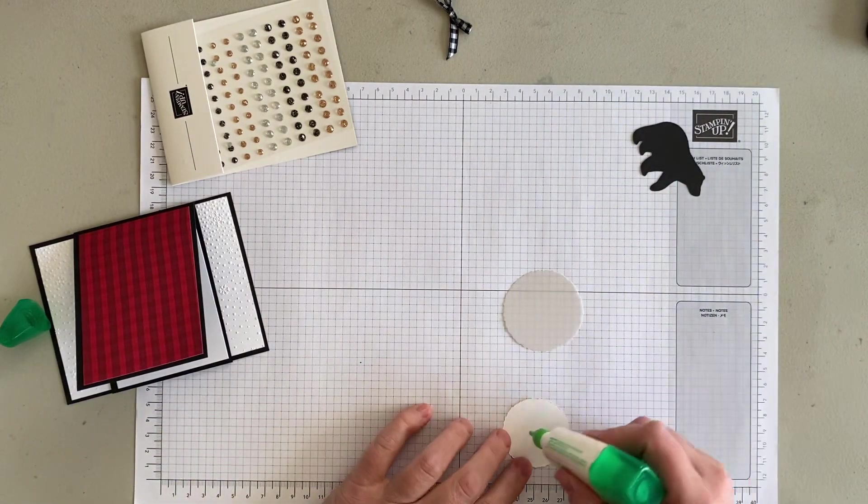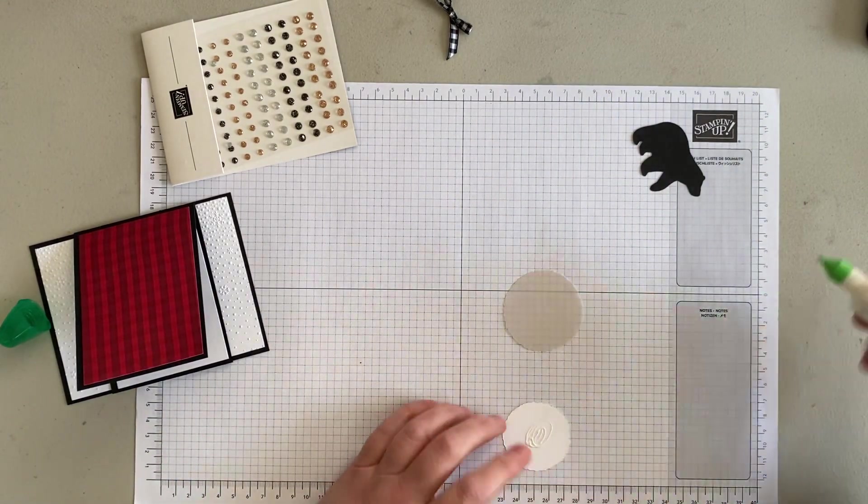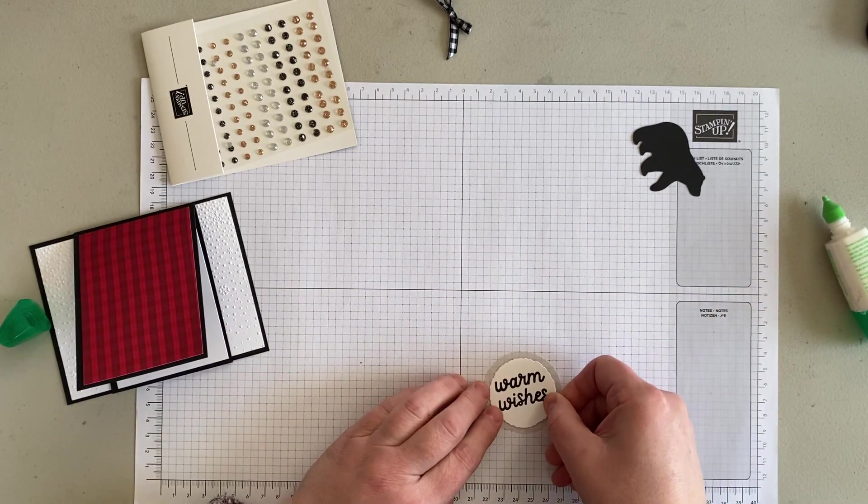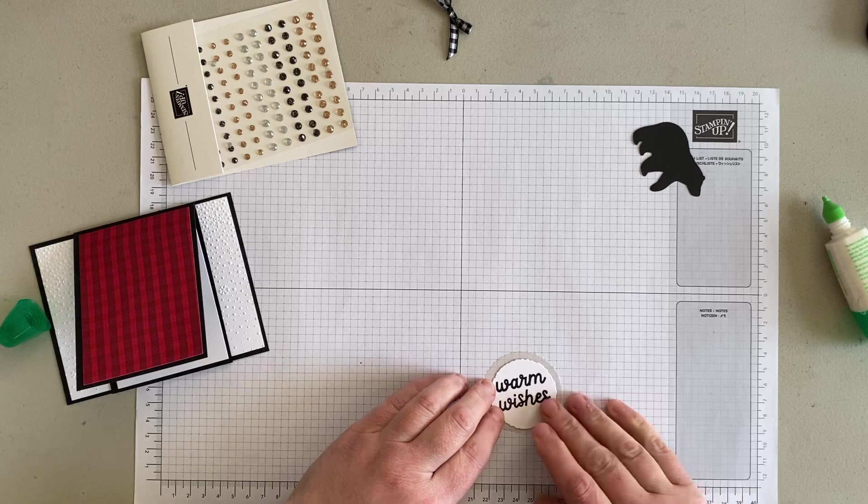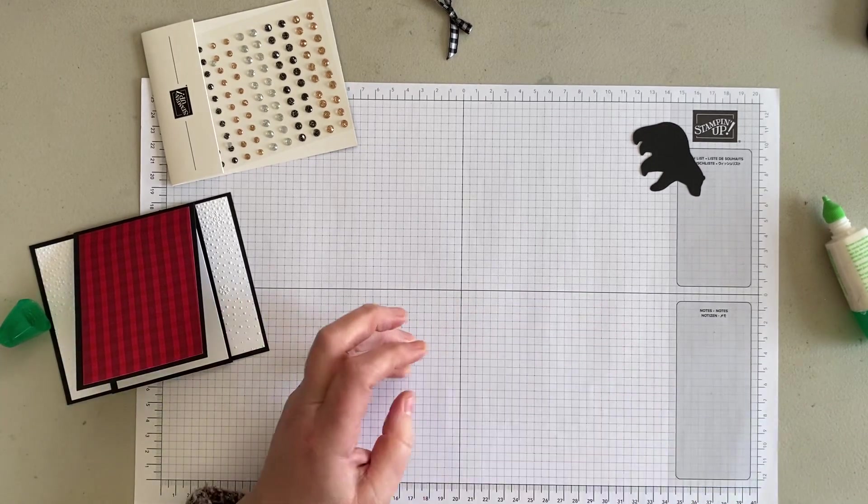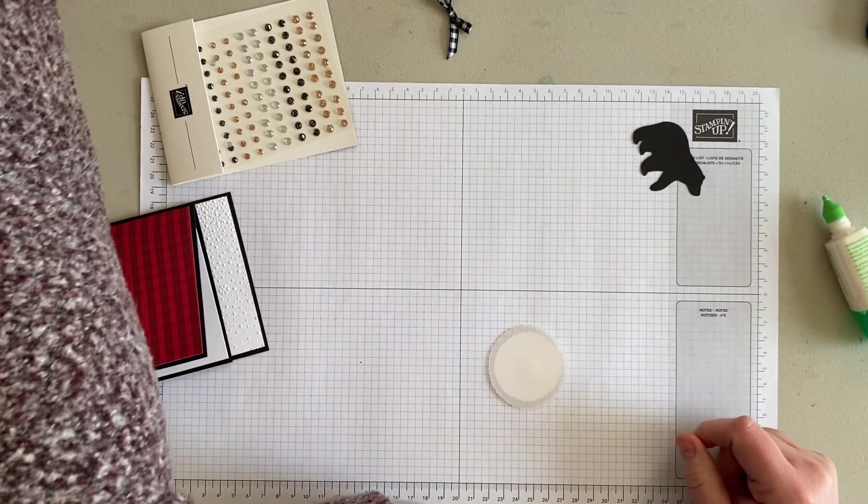I'm going to put a little adhesive behind there, stick it to my vellum, and then I'm going to put dimensionals on the back.